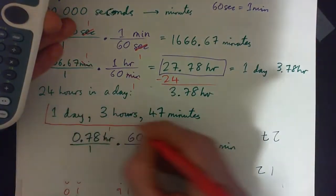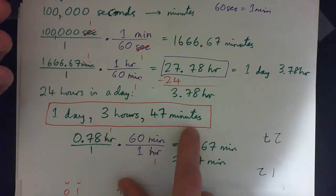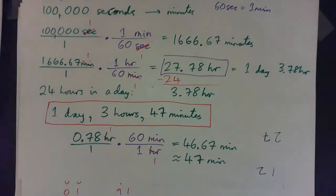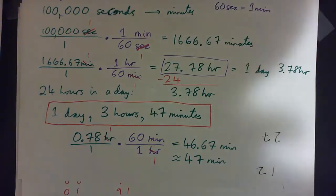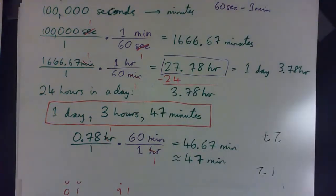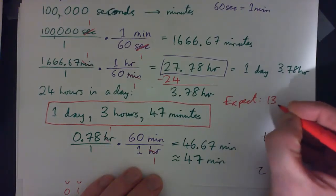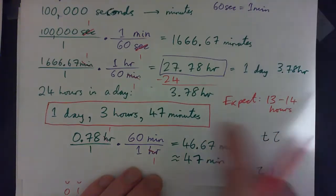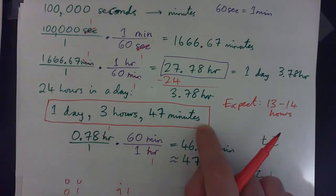There's our final answer. One day, three hours, 47 minutes of turning those wheels at the most. You're going to guess it before then. It'd be very unlucky for you to guess the correct combination at the very last guess. You'd probably expect it would take about half that time. You'd expect to take half a day, 12 hours, and half of that, maybe about 13 or 14 hours. But if you're totally unlucky and you guessed it at the last possible combination, this is how long it would take.